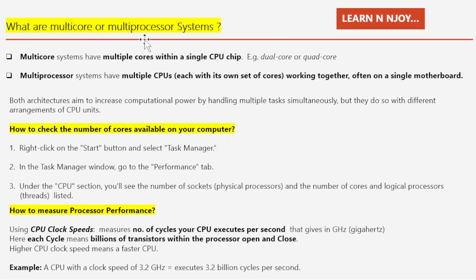What are multi-core or multi-processor systems? Let's understand the hardware behind it all. Multi-core systems have multiple cores within a single CPU chip — for example, dual-core or quad-core. On the other hand, multi-processor systems have multiple CPUs, each with its own set of cores, working together often on a single motherboard. Both architectures aim to increase computational power by handling multiple tasks simultaneously, but they do so with different arrangements of the CPU.